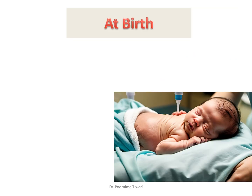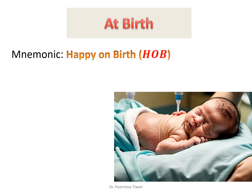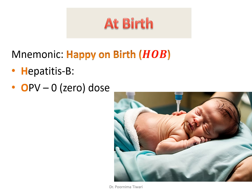At birth, Hepatitis B is given, a zero dose of OPV is given, and BCG is given. This can be remembered by the mnemonic 'HOB' — Happy On Birth — H for Hepatitis B, O for OPV zero dose, and B for BCG.